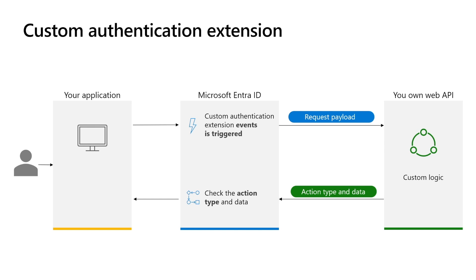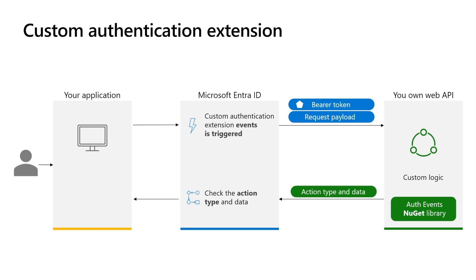You don't need to worry about developing the web API and validating the security token by yourself. We provide an authentication events NuGet library for .NET Web APIs, which handles the backend processing for the incoming HTTP requests from Microsoft Entra ID and provides the developer with token validation for securing Web API calls, an object model, typing, and IntelliSense. The communication between Microsoft Entra ID and your web API is secured via OAuth 2 bearer tokens. The authentication events NuGet library provides automatic validation for the bearer token. And for projects that don't use the NuGet library, we provide information on how to secure your web API.